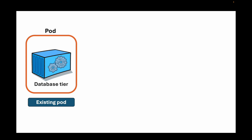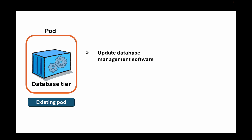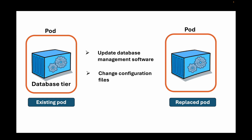Let's take an example — consider the database tier. We have a container running our database and we want to update the database management software or change some configuration files. To do this, we update the pod by deleting the existing pod and replacing it with a new pod containing the updated image. This can become tricky, but thankfully there are great resources in Kubernetes we will explore in further episodes.